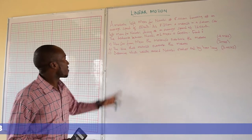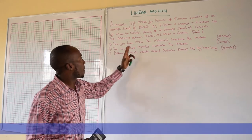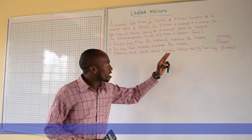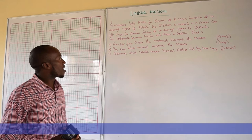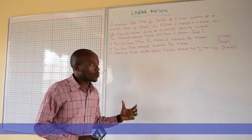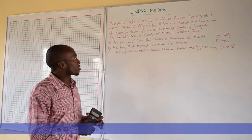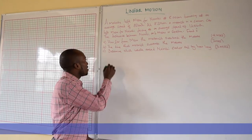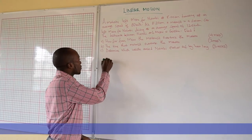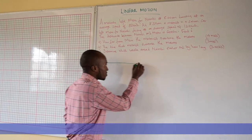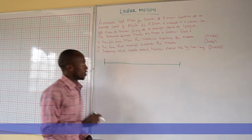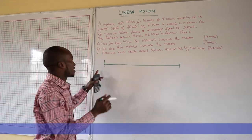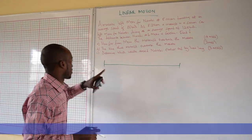Find how far from Meru when the motorist overtook the Matatu. Now, after reading all that information, we illustrate and simplify the information with a diagram — just a straight line representing the road and the distance between the two towns.